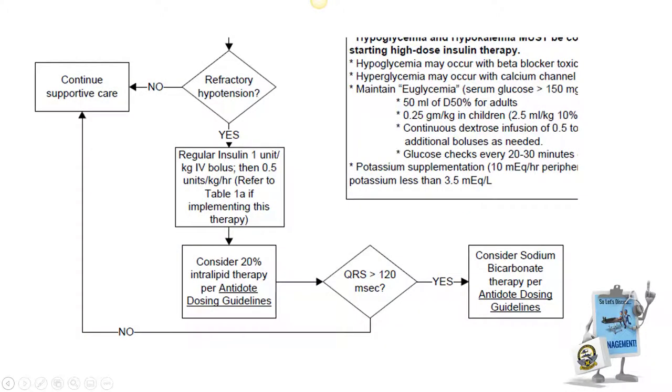If the patient is experiencing refractory hypotension, additional therapy will be needed. This may include high-dose insulin with euglycemia and a 20% intralipid emulsion.